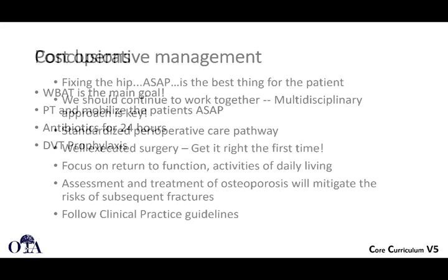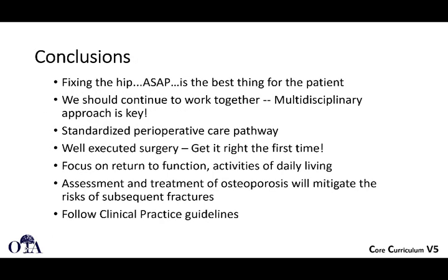DVT prophylaxis is critical — refer to the AAOS clinical practice guidelines at aaos.org for guidance. In conclusion: fixing the hip as soon as possible is best for the patient. A multidisciplinary approach is key, and co-management with a standardized perioperative pathway is very helpful. Get the surgery right the first time — pay attention to tip apex distance, use the right implant, and focus on return to function and activities of daily living. These patients often have osteoporosis and may need appropriate medical treatment to help prevent future fractures.